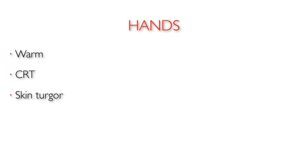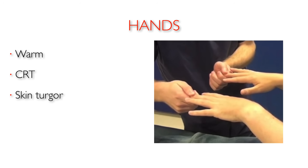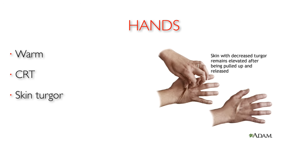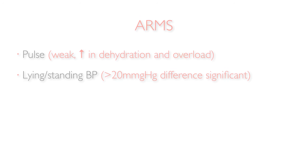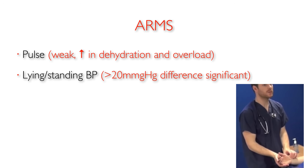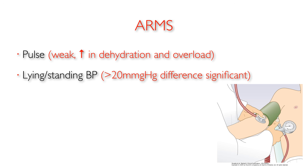Start the examination of the hands as always. Are they warm, and what's the capillary refill time? Check the skin turgor on the back of the hand, although this is less reliable in the elderly. Feel the radial pulse for rate and rhythm. Tachycardia may occur in overloaded or underfilled patients.